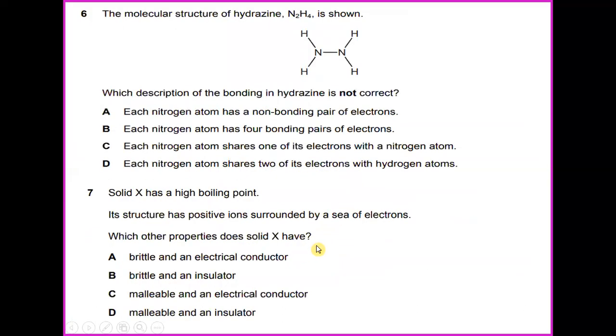The molecular structure of hydrazine N2H4 is shown. Which description of the bonding in hydrazine is not correct? In this case, hydrazine has only two non-bonding pairs, one on each end. So the answer which is not correct is each nitrogen atom has four bonding pairs of electrons.